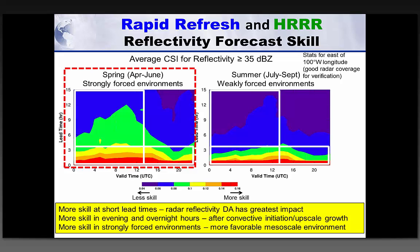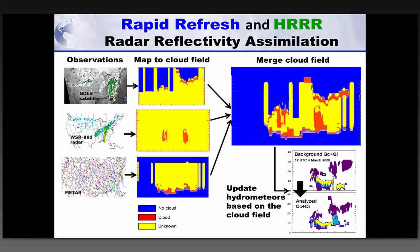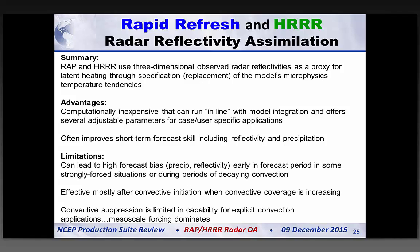We also specify hydrometeors in a non-variational way — I won't go into detail here, but that leads to where we're going in terms of more sophisticated data assimilation. In summary: three-dimensional radar reflectivities are used to specify latent heating rates. It's a very cheap, quick method that serves as a good baseline for future attempts at increasing the sophistication of radar data assimilation. It certainly improves forecast skill, but can lead to a higher forecast bias in the first few hours.